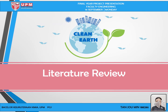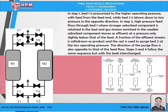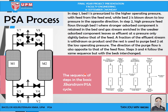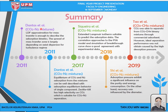Moving on to the literature review, these two figures show the PSA process, which is based on the SACROM PSA cycle consisting of four steps: adsorption, desorption, purge, and blowdown. These are the summaries of the literature, where there are five researcher journals that I referred to frequently for this study.